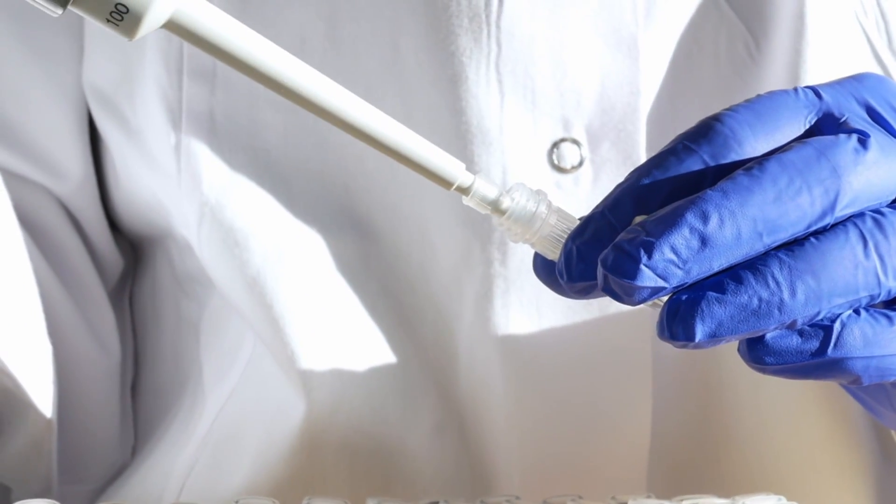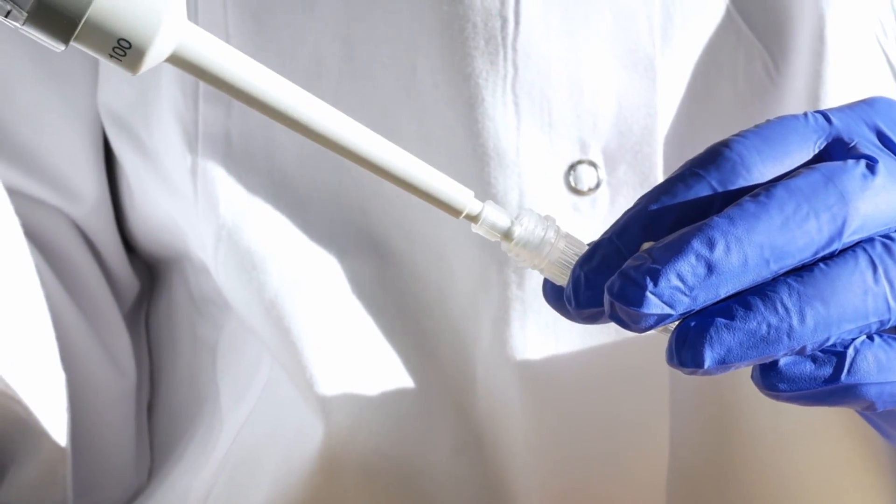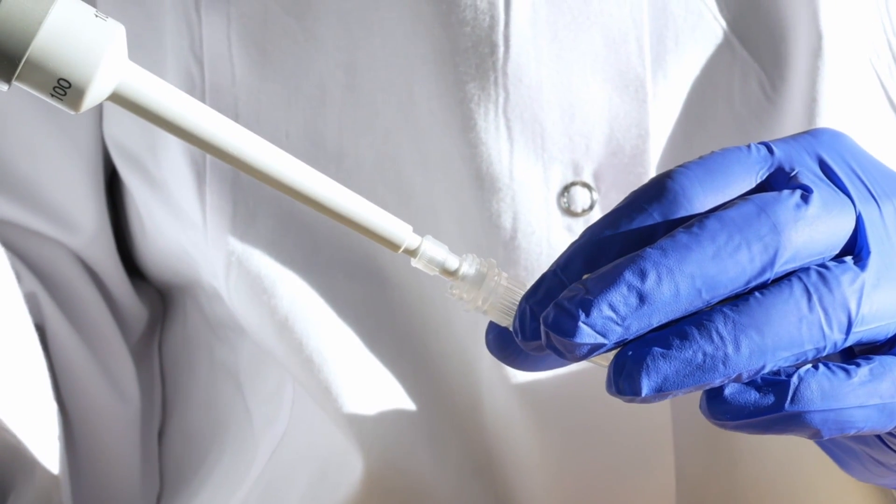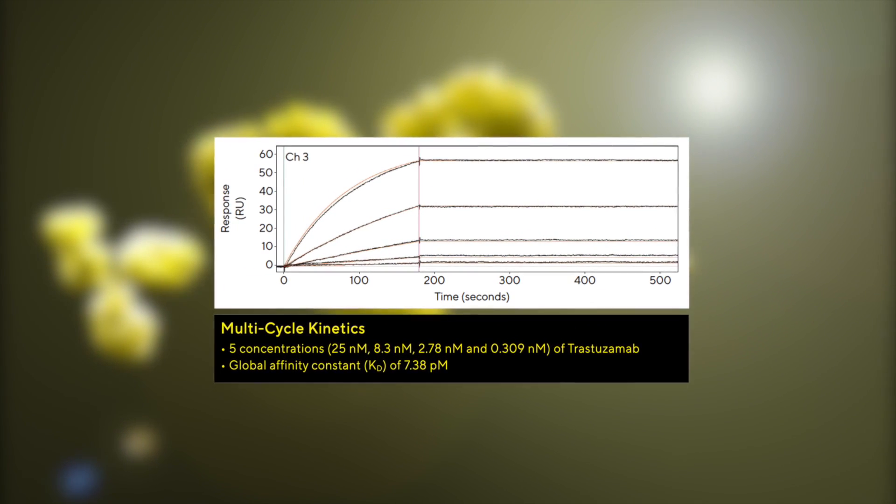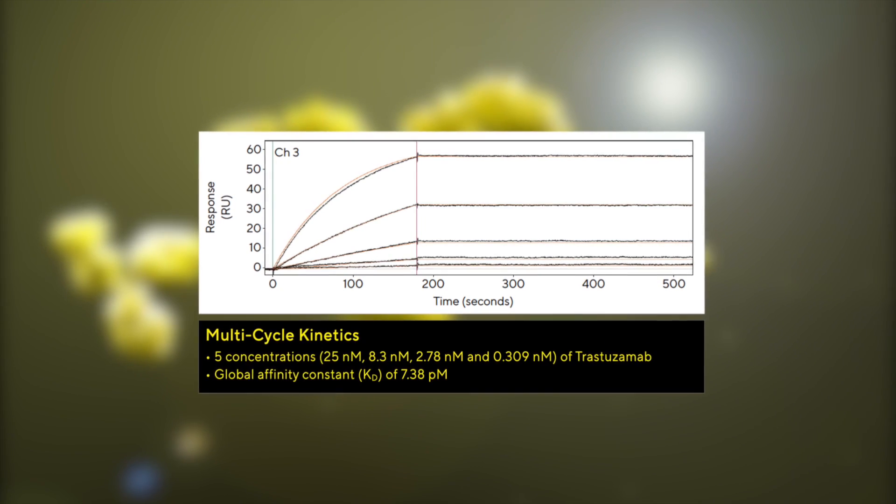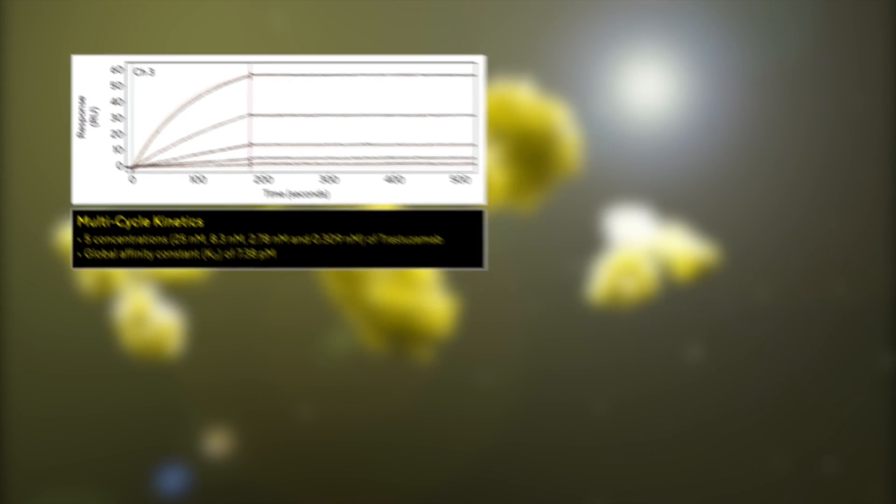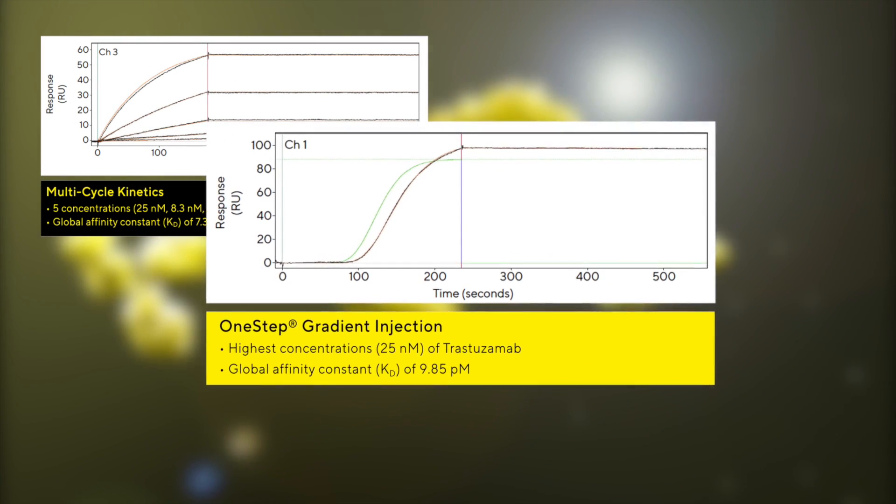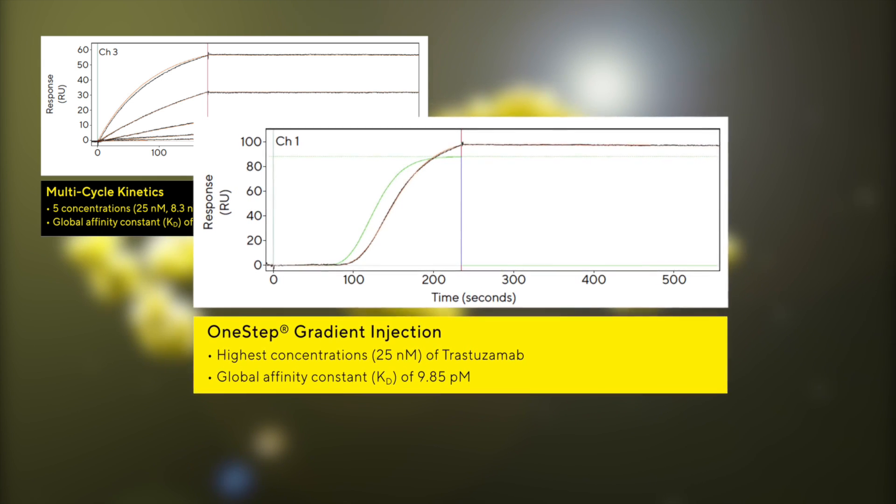This means you no longer need to spend time preparing multiple dilution series, or worrying about inaccuracies in creating a specific analyte concentration series. Instead, 1-step gradient injections enable an accurate and comprehensive measurement of a molecule's kinetics and affinity from a single analyte concentration in a single well.